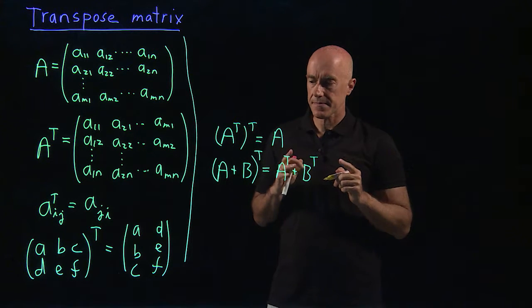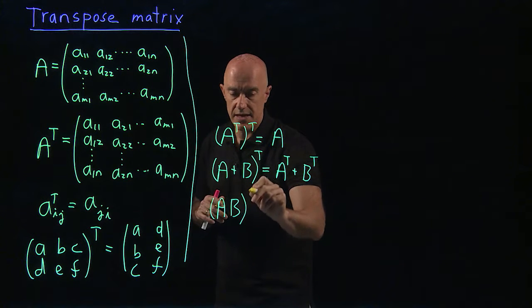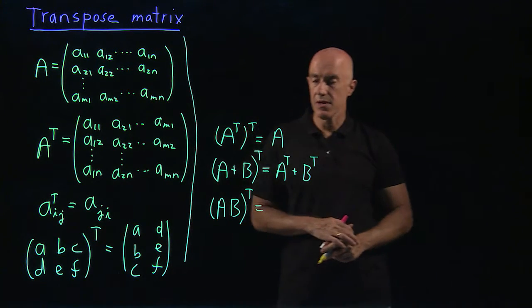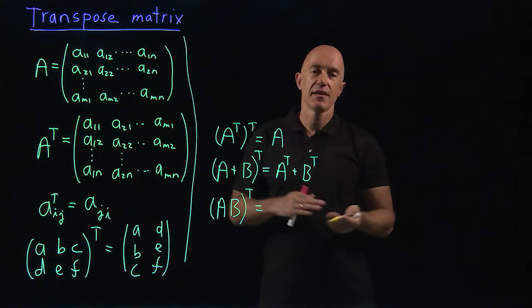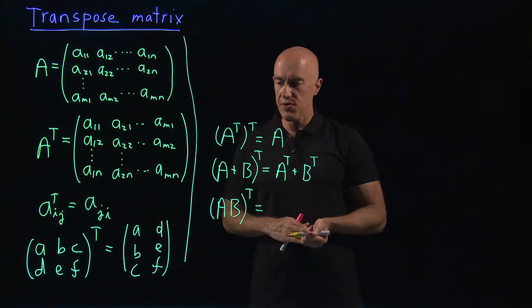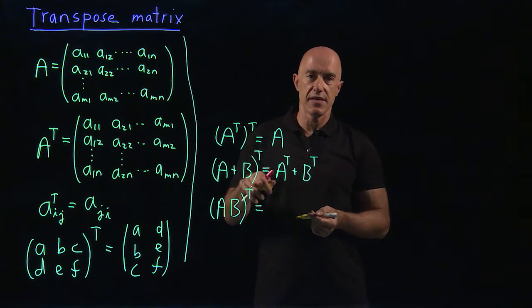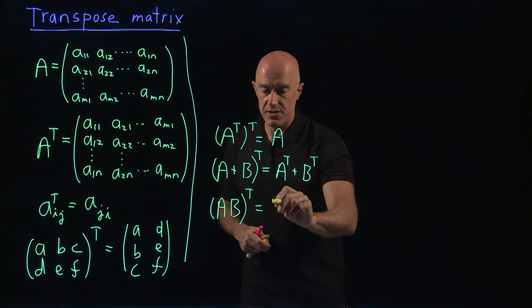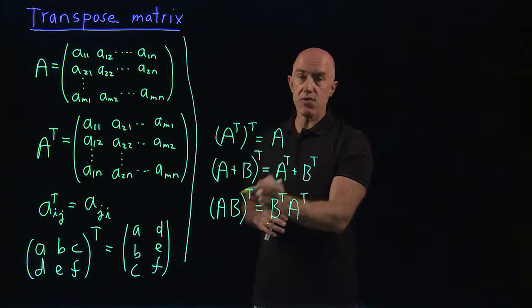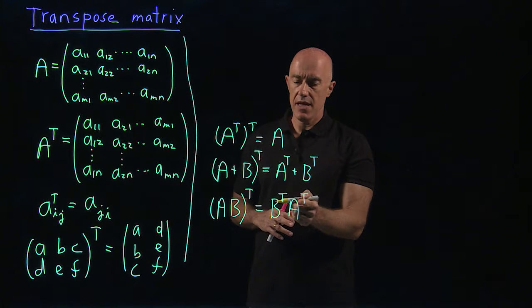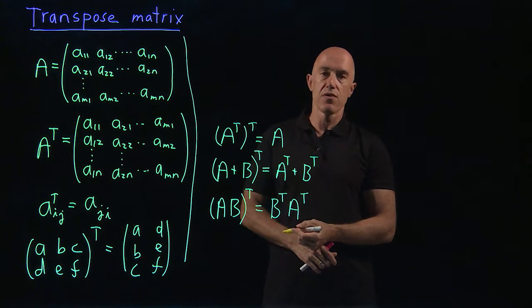Here is the tricky part. If you have the product of two matrices and you take the transpose, you might want to write A transpose times B transpose, but you would be wrong. This is a homework assignment, so you can work it out by looking at the individual elements. If you do this, you'll see that it is B transpose times A transpose. When you take the transpose of the product of two matrices, it's the product of the transposes but you have to reverse the order of multiplication.